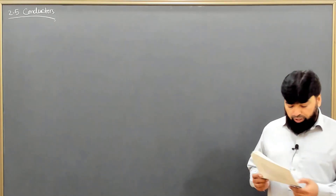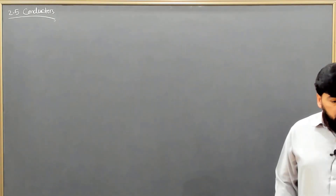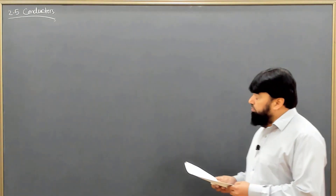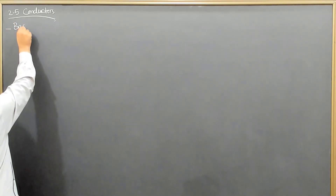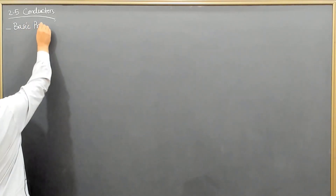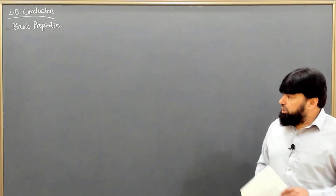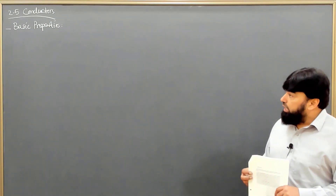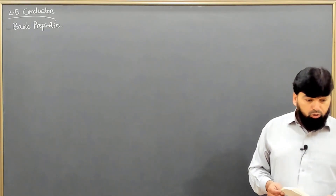In section 2.5, we will discuss conductors and do some conceptual discussion. The very first thing is the basic properties regarding conductors. We know that materials can be categorized in three main categories: a material will be a conductor, a semiconductor, or an insulator.